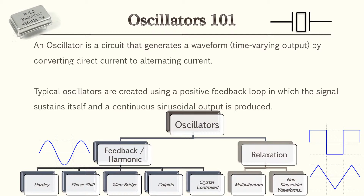There are two subtypes of oscillators: the feedback or harmonic type, and the relaxation type. We'll be focusing on the feedback type, as most references consider this the primary type. The relaxation type is where you find square waves and triangle waves, seen more on the digital systems side.